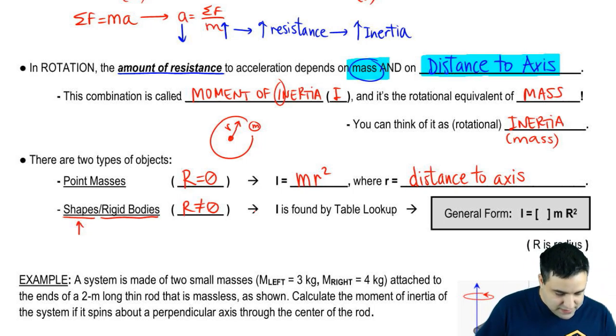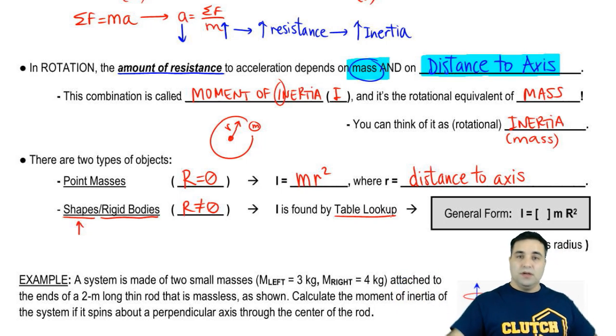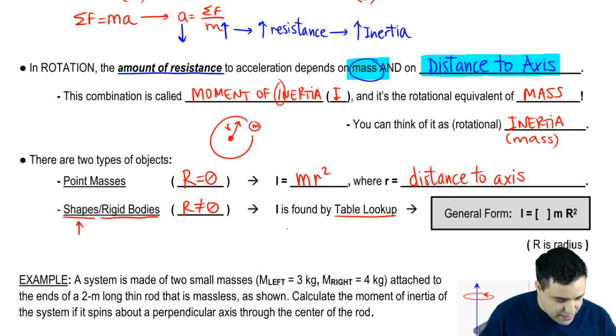And if it's a rigid body, I will be given by a table lookup. What do I mean by that? Well, your textbook has a table of moments of inertia. And it's going to say for a solid cylinder, the moment of inertia, for example, is half mr squared.